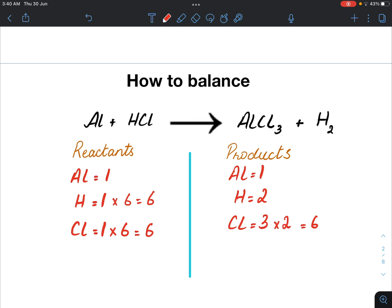And here on the product side, we have two hydrogen atoms. So I multiply it with three to give me six hydrogen atoms.